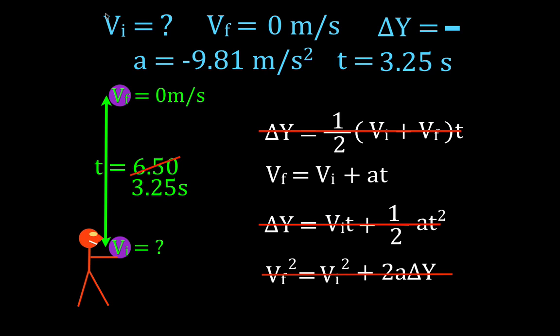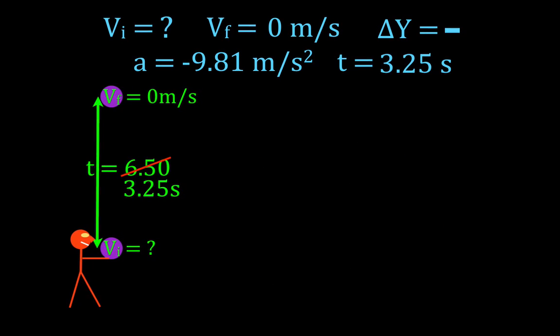This last equation here, let's see. It has the initial velocity which we're looking for. We know the acceleration. We know the time. We know the final velocity. This is the equation we're going to use to solve for initial velocity because we know the other three variables.